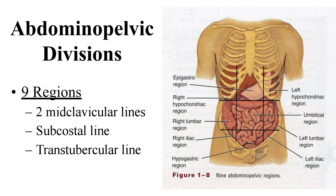Another way to divide the abdominal pelvic cavity is a little more specific: into nine regions. These nine regions are smaller than the quadrants, so it is more specific for the doctor. It can be a little slower, but it helps narrow the focus. You are going to be expected to know these nine regions — basically it's a tic-tac-toe board, and remember the patient is facing you, so right and left refer to theirs.